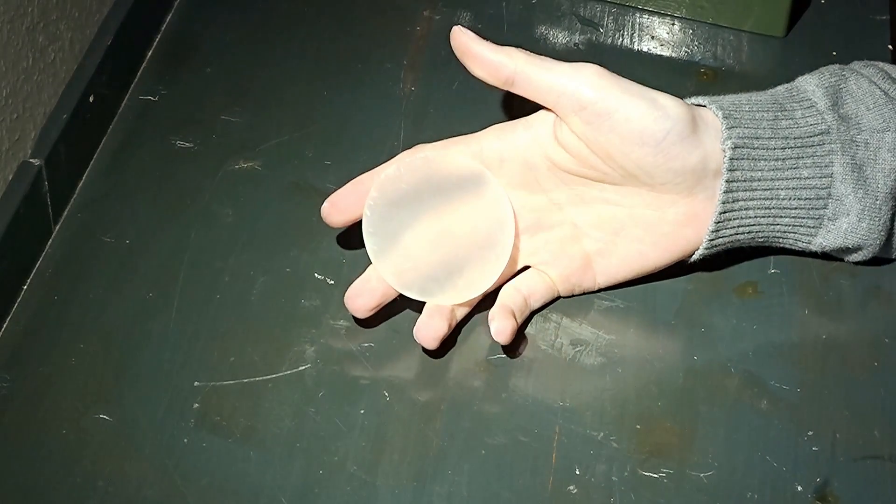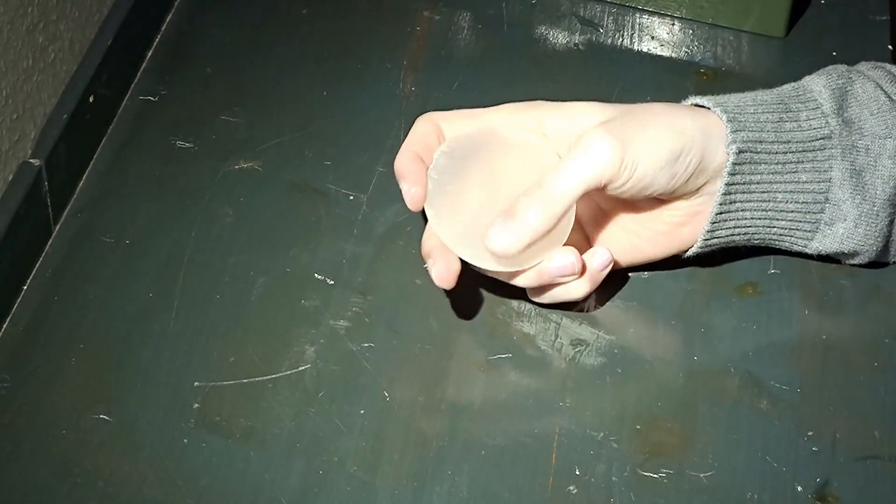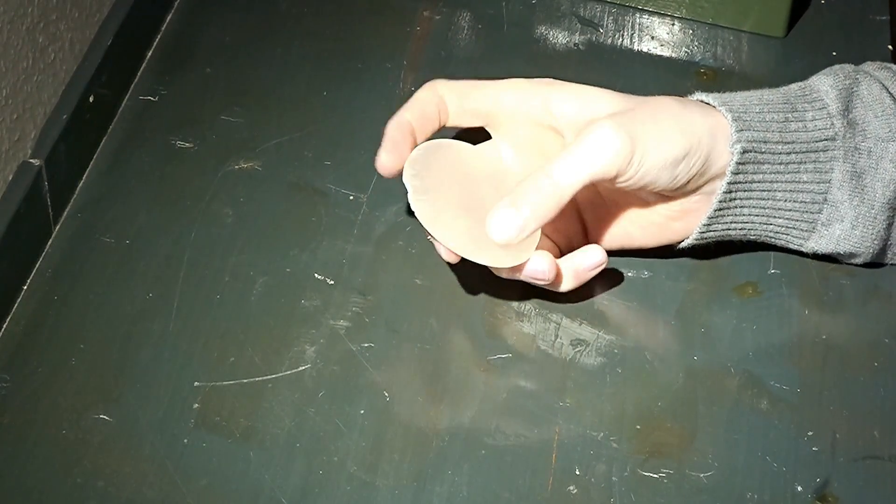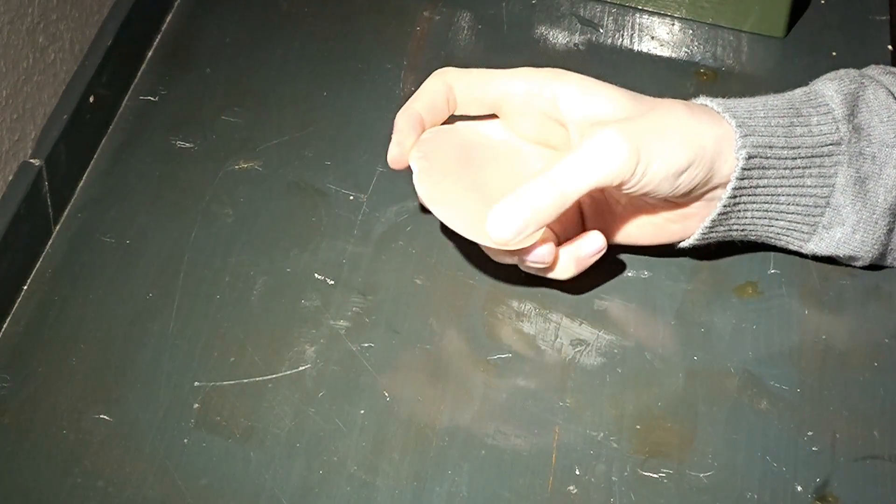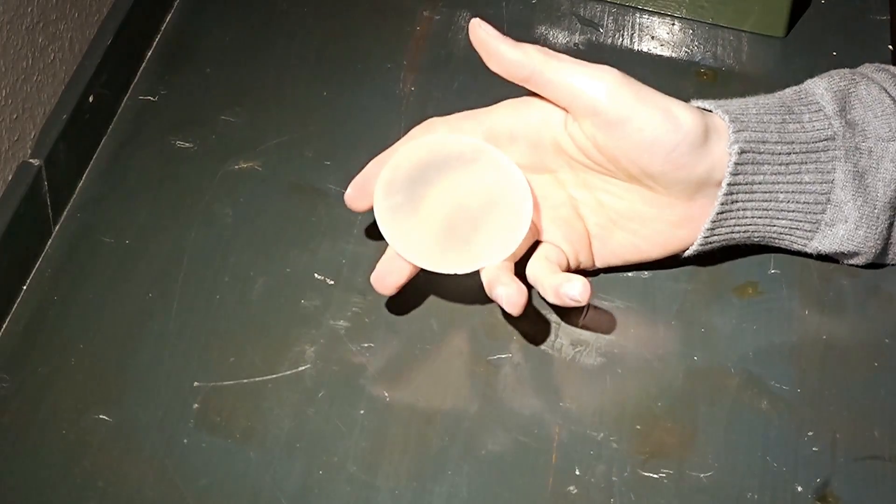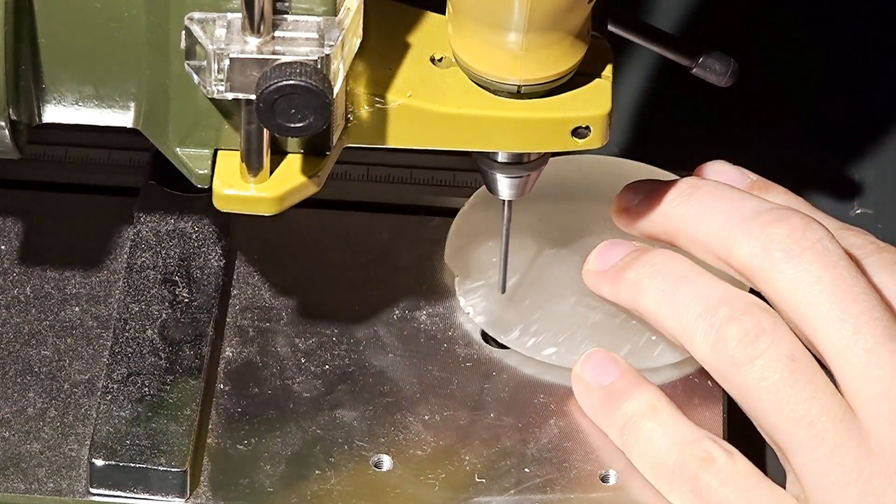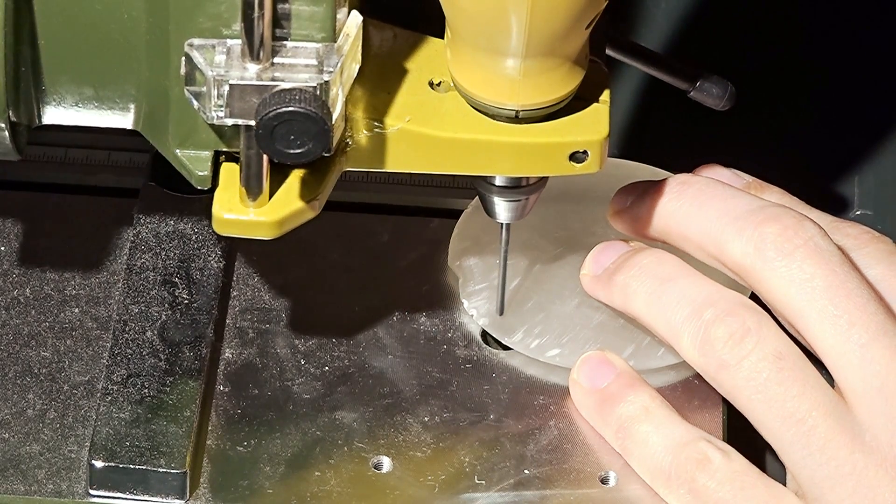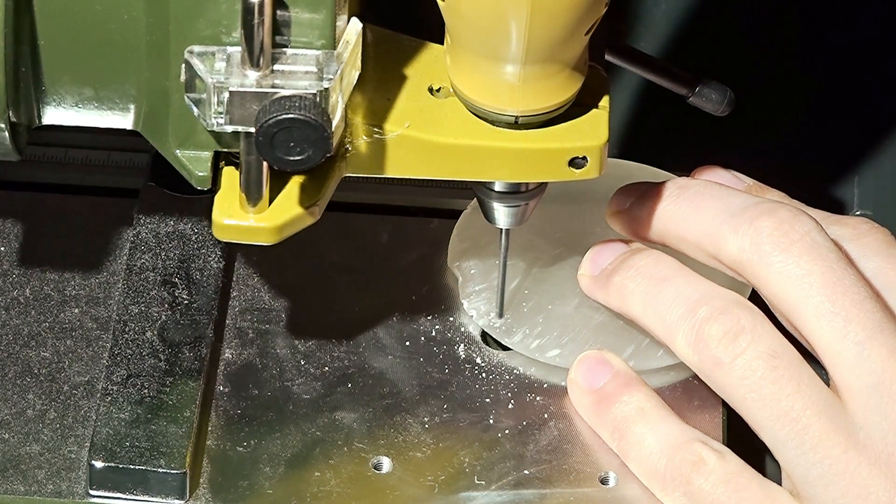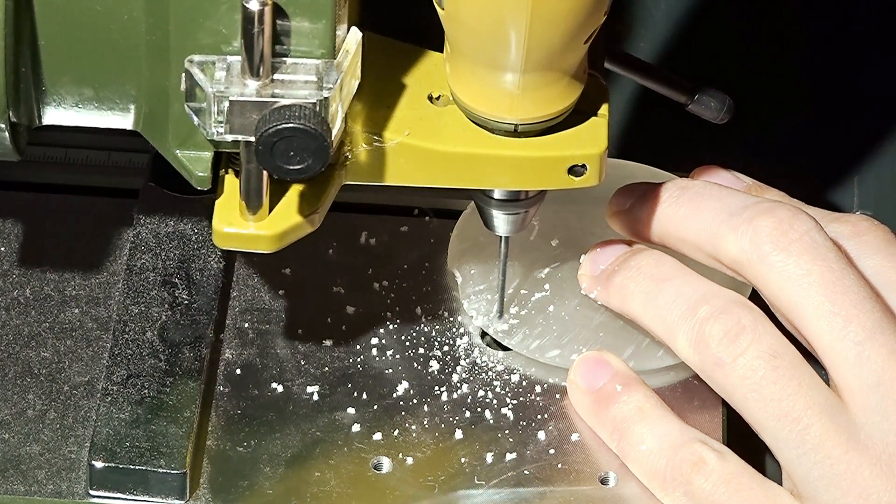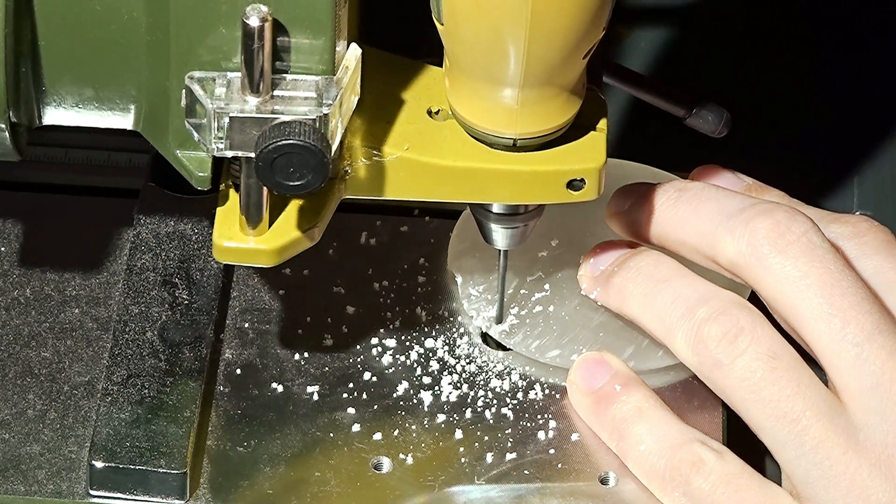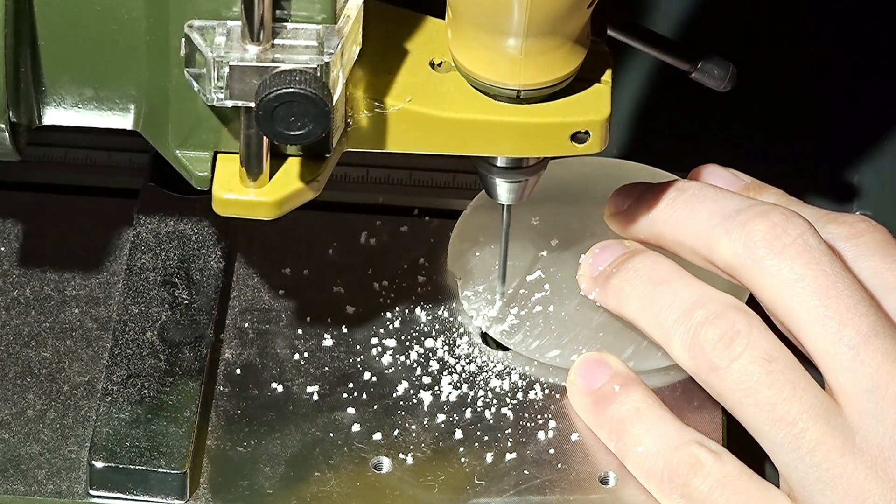Despite excessive sanding I couldn't get rid of all the scratches. Some of the deeper ones I think were caused by the mold. So when you notice after a certain time that the quality of the surface doesn't improve anymore, you should stop sanding and the next step would normally be polishing, but I will do something different and drill this little hole first.